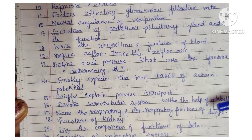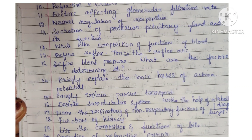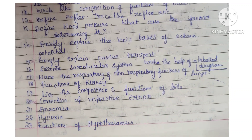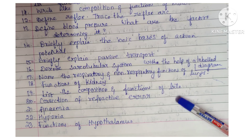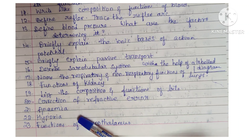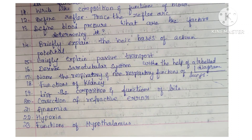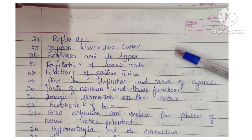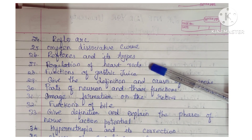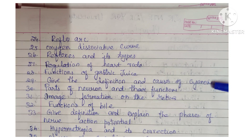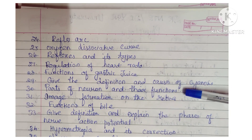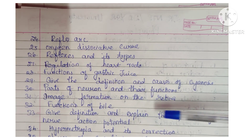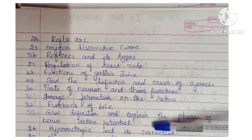More physiology topics: briefly explain the ionic basis of action potential, briefly explain passive transport, describe the sarcotubular system with a labeled diagram, name the respiratory and non-respiratory functions of lungs, functions of kidney, composition and functions of bile, correction of refractive errors, anemia, hypoxia, functions of hypothalamus, oxygen dissociation curve, reflexes and their types, regulation of heart rate, functions of gastric juice, definition and causes of cyanosis, parts of neuron and their functions, image formation on the retina, and functions of bile.